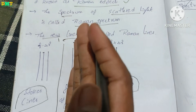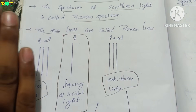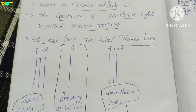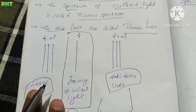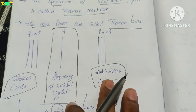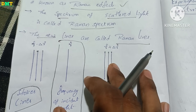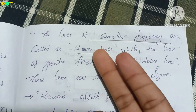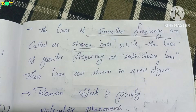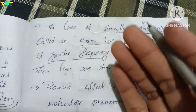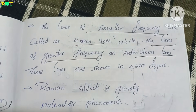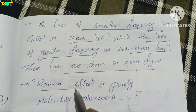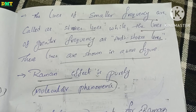The new lines observed are called Stokes lines. Lines of smaller frequency are called Stokes lines, while lines of higher frequency are also produced. These lines are shown above. We can see the Raman effect is a purely molecular phenomenon.